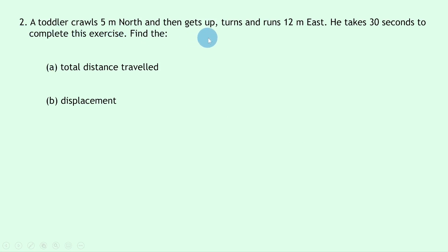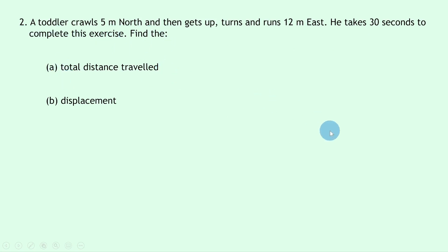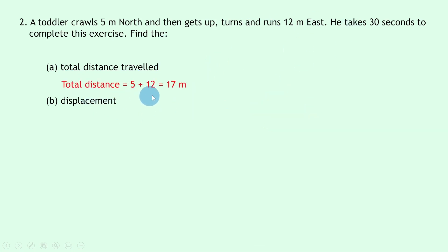Question 2 says a toddler crawls 5 meters north and then gets up, turns, and runs 12 meters east. It takes 30 seconds to complete this exercise. Find the total distance traveled first of all. Remember, to find total distance we just add up the distances, so we have total distance equals 5 plus 12, which equals 17 meters.